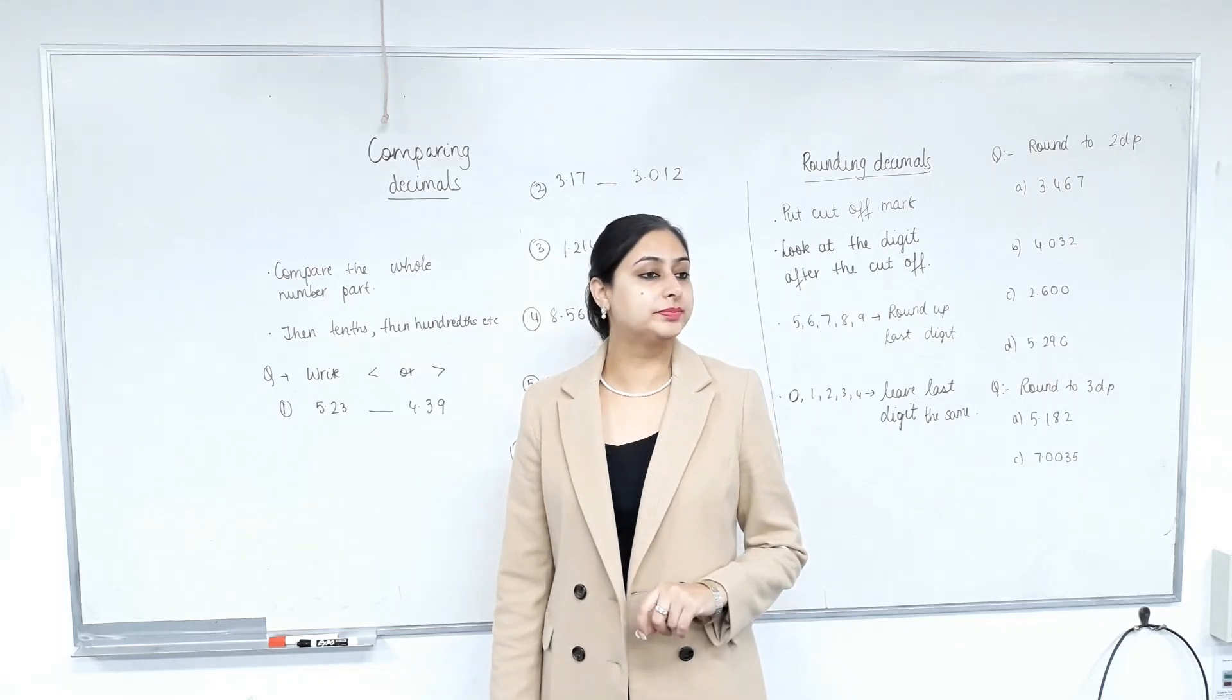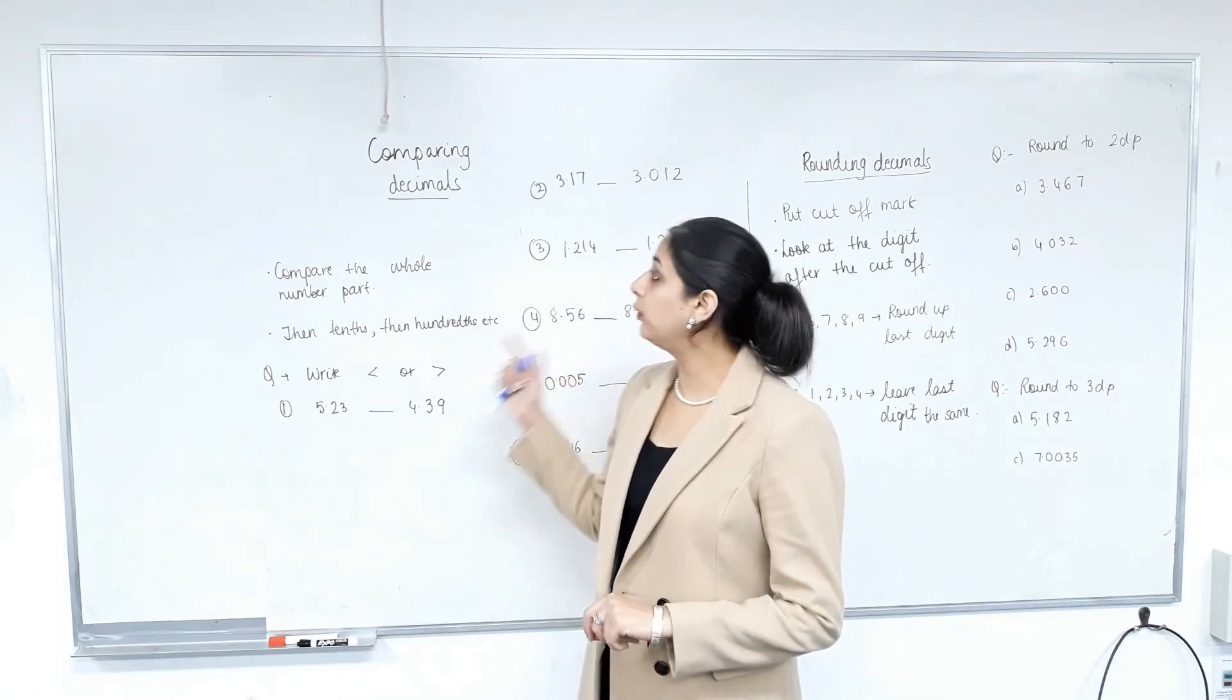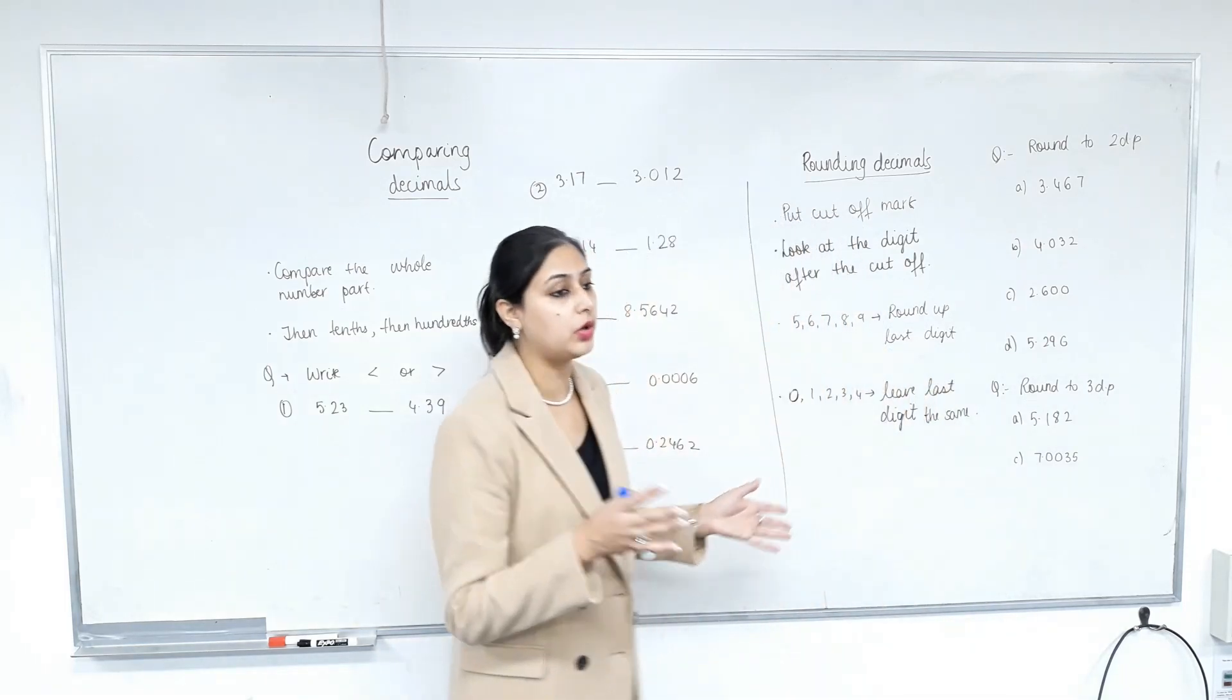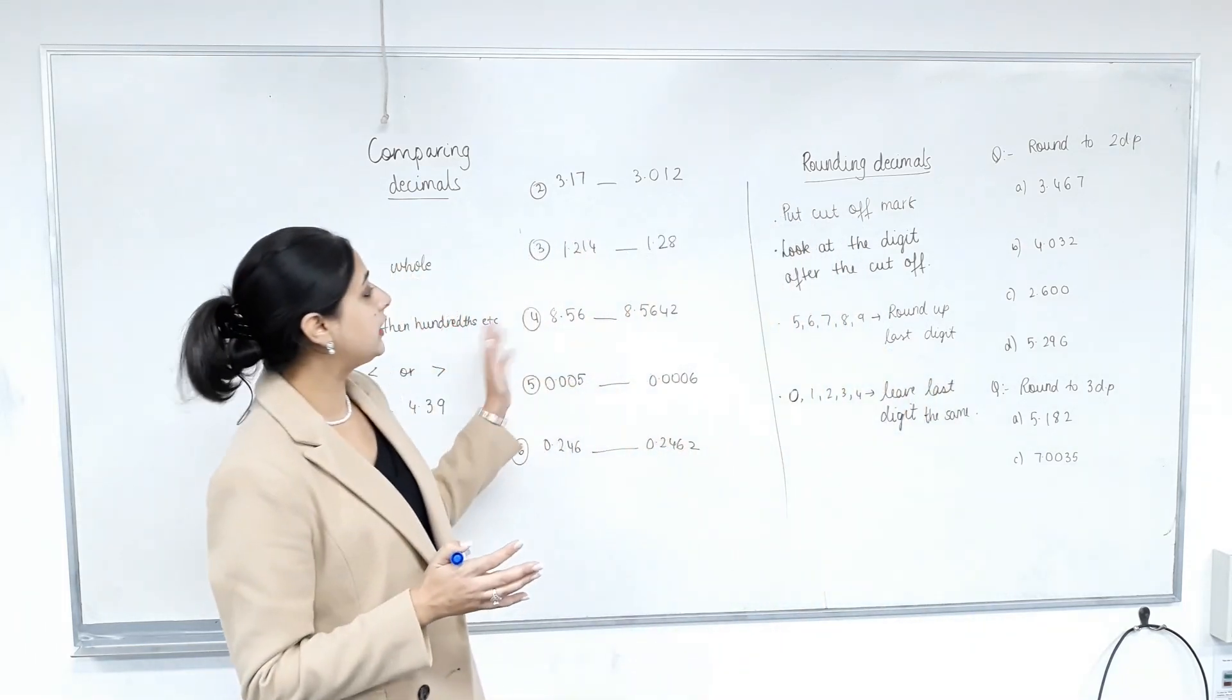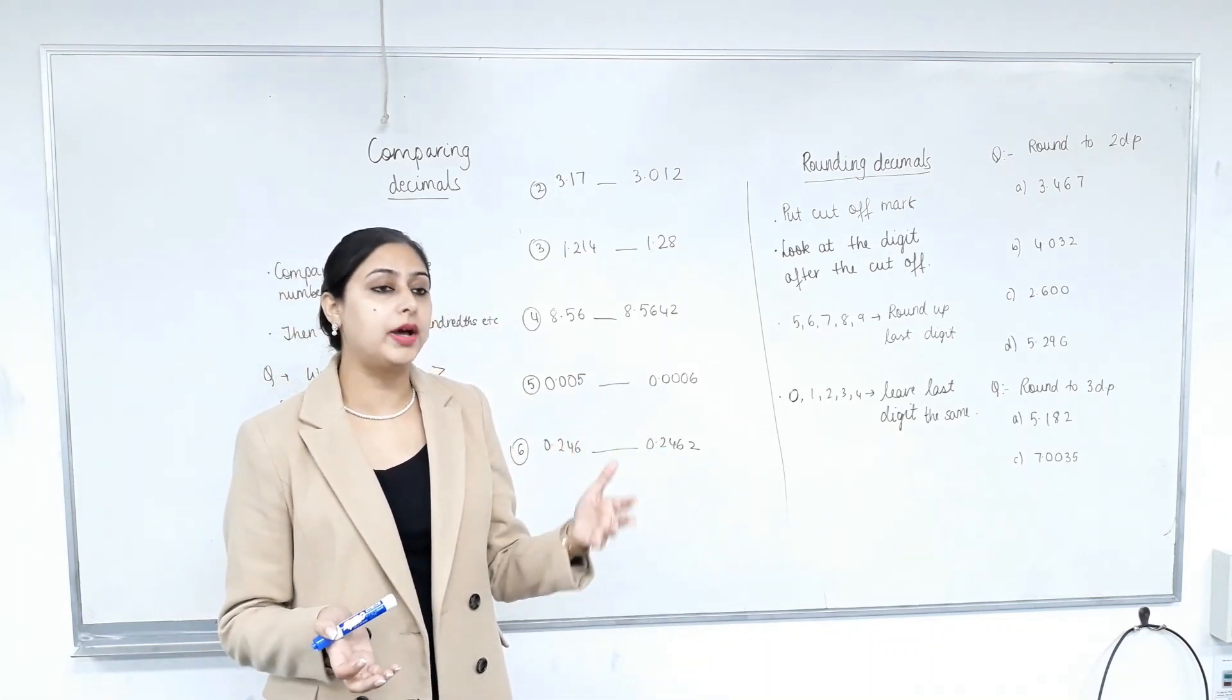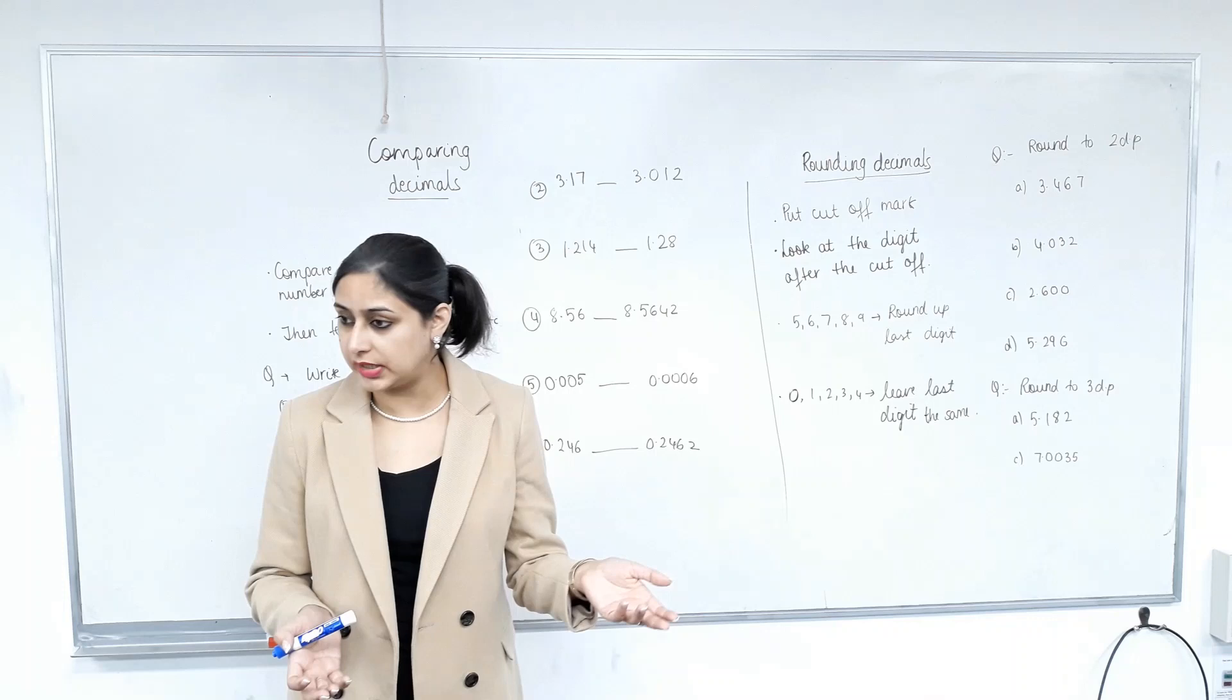Alright, good morning everyone. We are moving on to comparing decimals and rounding. So we still continue on with 3a. These are the things we need to do before we start adding and subtracting. Do we remember the place value notation of decimals?